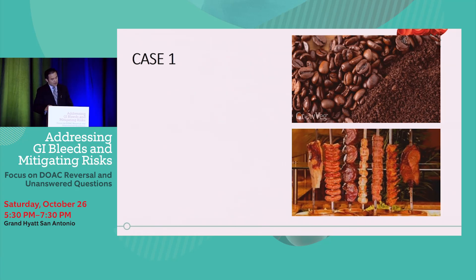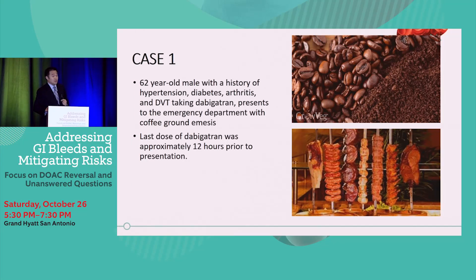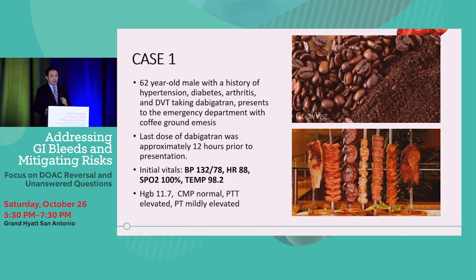Let's begin with a couple of basic cases I typically see in the ER. Case one: a 62-year-old male with a history of hypertension, diabetes, arthritis, and DVT, taking dabigatran, presenting to my emergency department with coffee ground emesis on a Saturday night at approximately 11 o'clock. His last dose of dabigatran was approximately 12 hours prior. Initial vital signs look clinically well: blood pressure 132/78, heart rate 88, SpO2 and temp fine. Hemoglobin initially 11.7, CMP normal, PT mildly elevated.